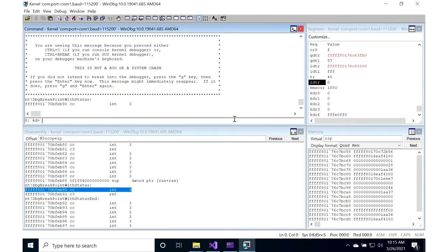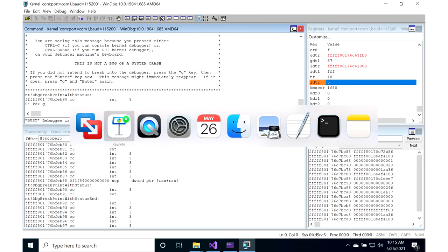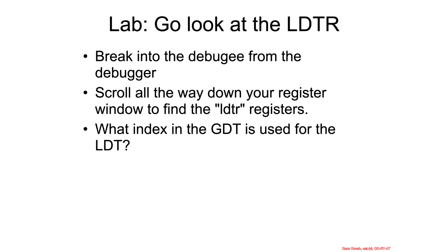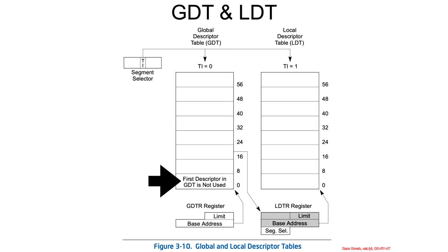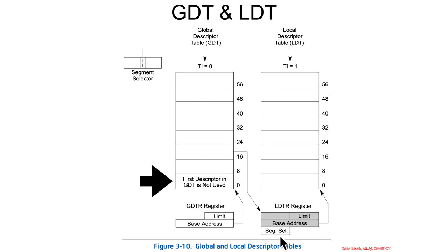So what is zero? Well, zero is actually an invalid entry in the GDT. It says right here that the first descriptor in the GDT is not used and is treated as invalid. So that means, for all intents and purposes, right now on this Windows version, the LDT is not being used at all.